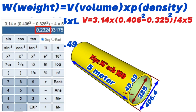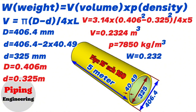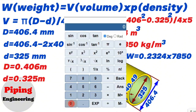So we calculated and found that the volume of the 16-inch pipe in our example equals 0.2324 cubic meters. We already knew the iron steel density is 7,850 kg per cubic meter. Now let's write this information into the weight calculation formula. Weight equals volume 0.2324 cubic meters multiplied by the density of the material, 7,850 kg per cubic meter. Using the calculator, we find that 0.2324 multiplied by 7,850 equals 1,824.